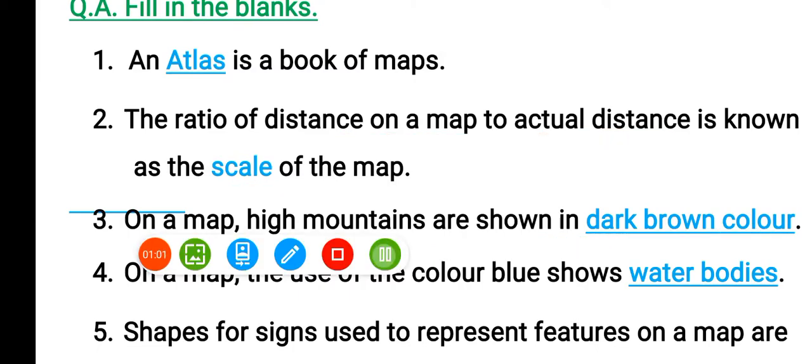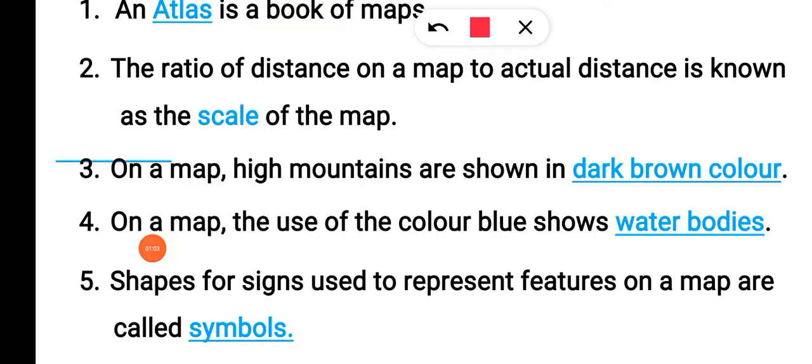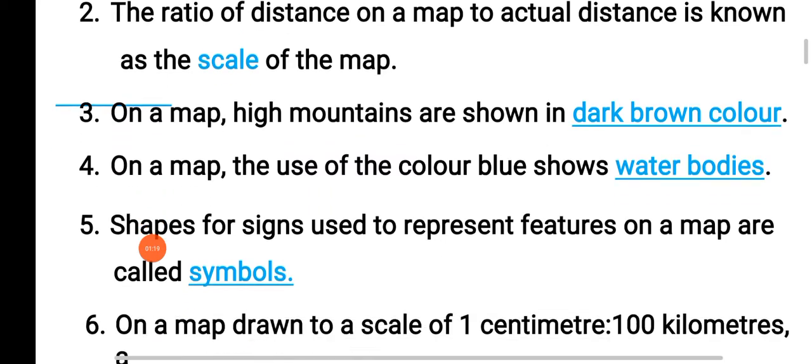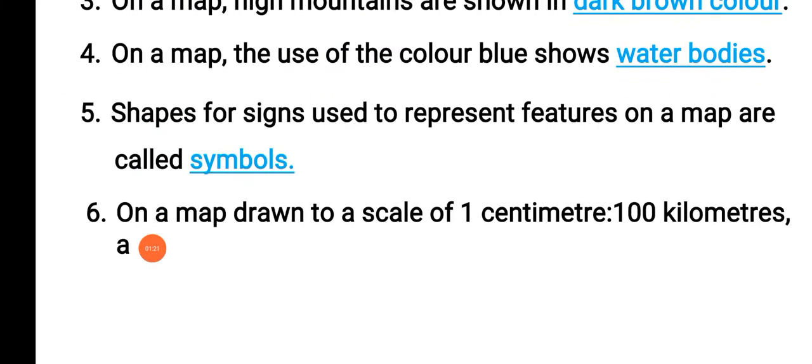On a map, high mountains are shown in dark brown color. What color shows mountains on a map? Dark brown color. On a map, the use of the color blue shows water bodies. Brown is used for mountains, green is used for plains. Shapes or signs used to represent features on a map are called symbols. For example, we use symbols for temples, mosques, roadways, railways, broad gates - everything has a symbol.